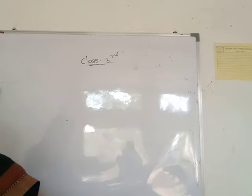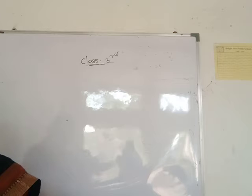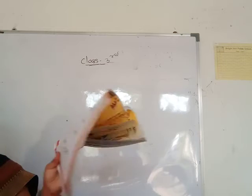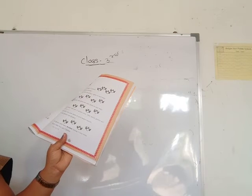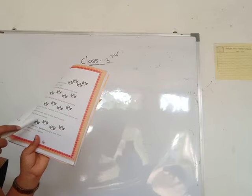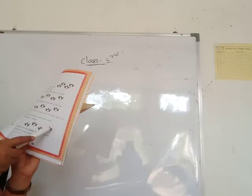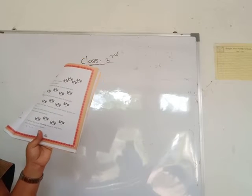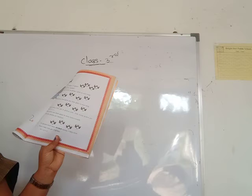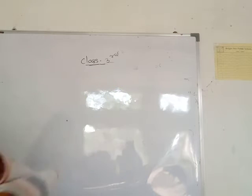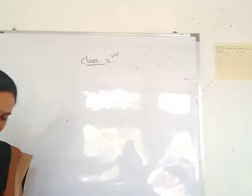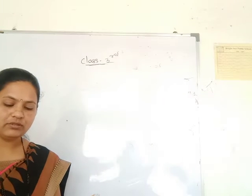How many grains are left? Four grains are left. She puts one more grain into each baby's mouth and all the grains are finished. Each baby's mouth has three grains — three, three, three, three. So 12 grains have been divided among four baby birds and each baby has got three grains. This means 12 divided by 4 is equal to 3.